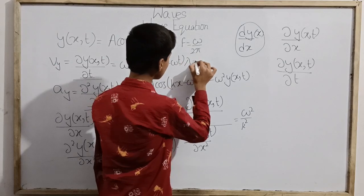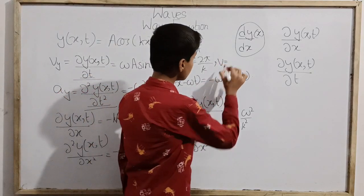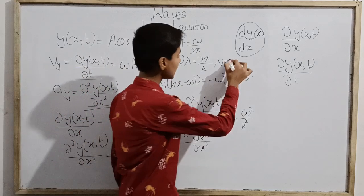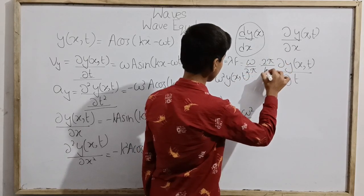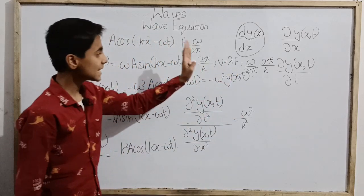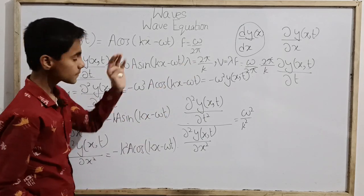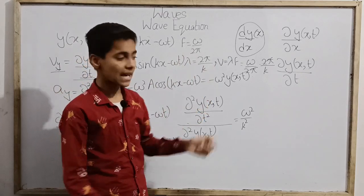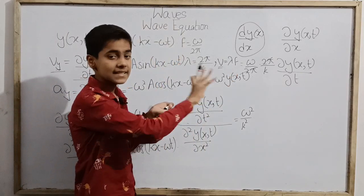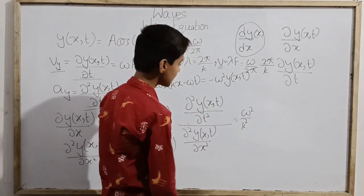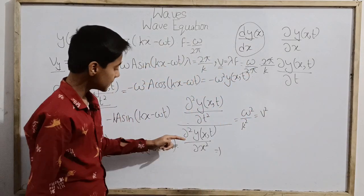We know that ω = 2π/T and k = 2π/λ, so ω/k gives the wave speed. Therefore ω²/k² = v², where v is the wave speed — also called phase velocity. Note that this v is not the same as vy; this is the speed at which the wave propagates, while vy is the speed at which the particles move up and down in SHM.